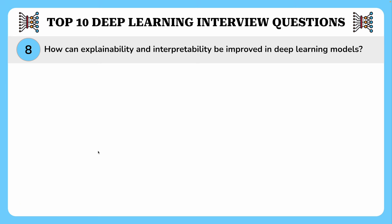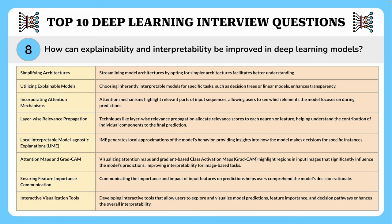Enhancing the explainability and interpretability of deep learning models is crucial for building trust and understanding the decision-making process. Strategies to achieve this include simplifying model architectures, utilizing explainable models, incorporating attention mechanisms, layer-wise relevance propagation, LIME (local interpretable model-agnostic explanations), attention maps, Grad-CAM, ensuring feature importance communications, and interactive visual tools. Take a screenshot of this screen to keep it for your later reference.